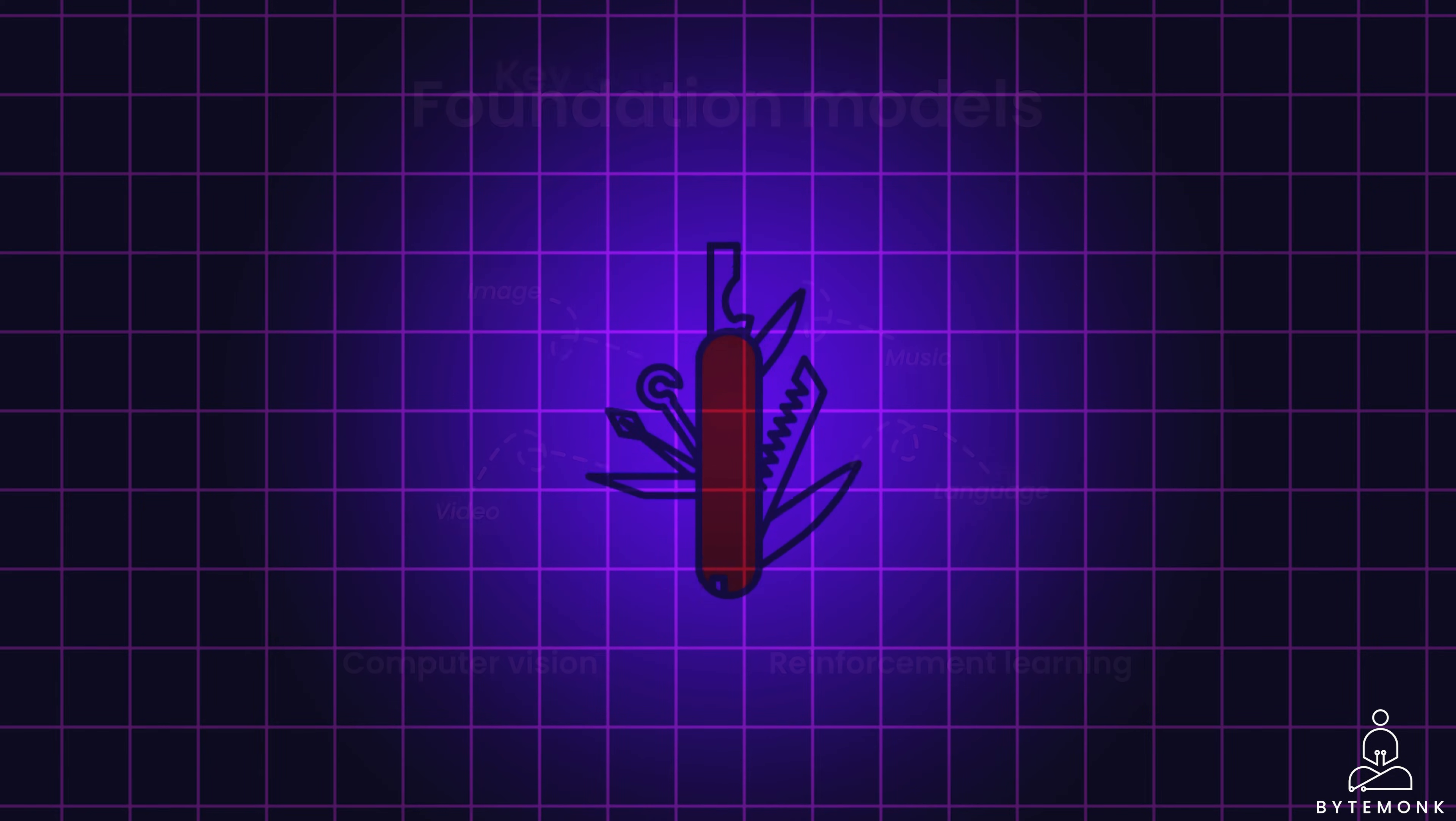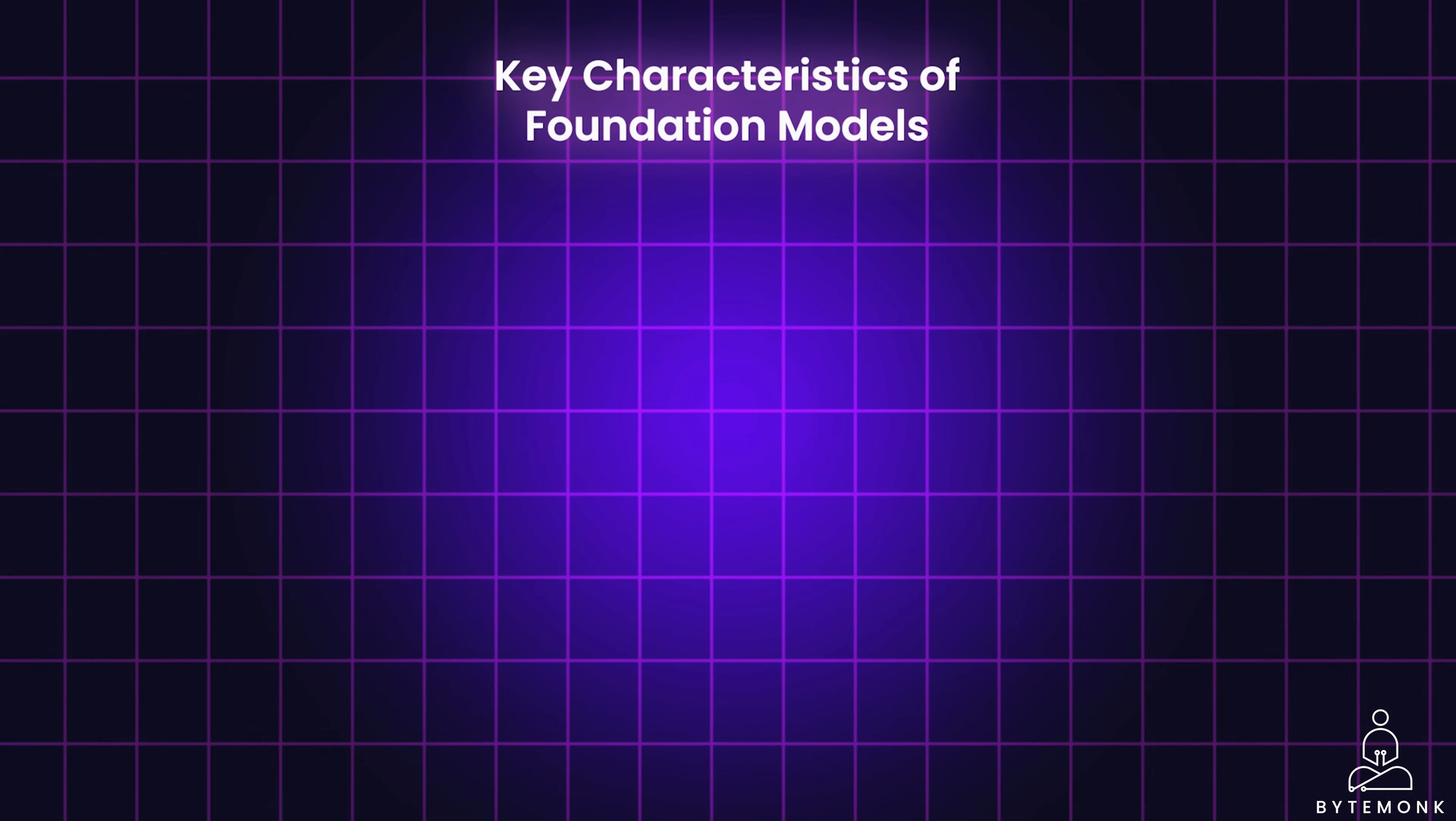So here are some key characteristics of foundation models. Foundation models are trained on enormous data, often text, images, or code. And this pre-training gives them a broad base of knowledge.